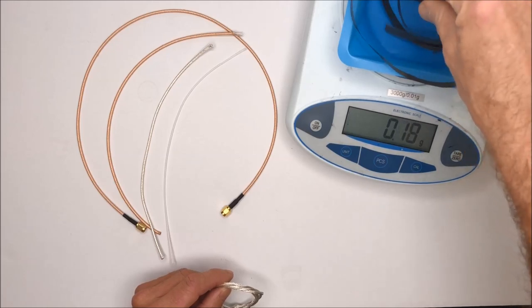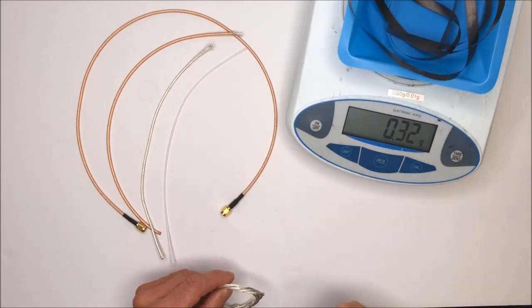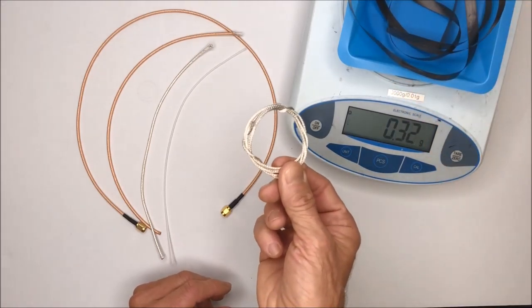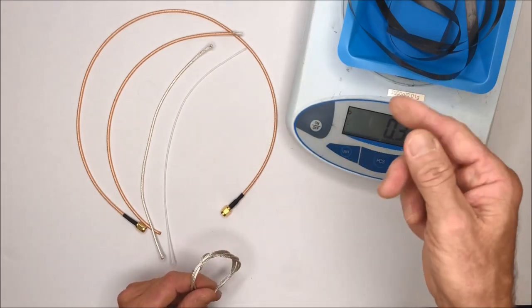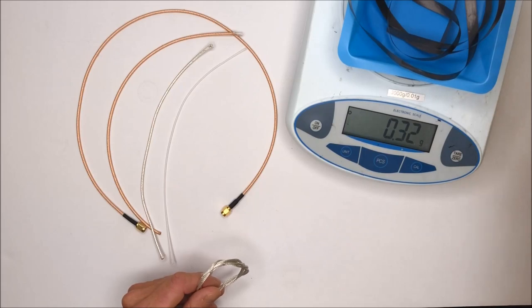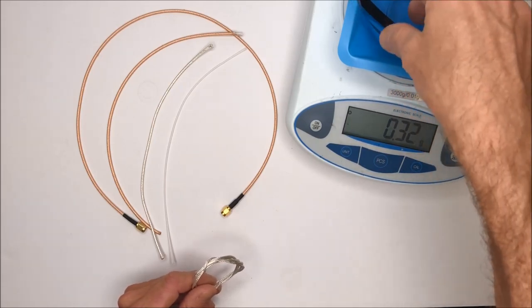So these two pieces of CNT tape are capable of replacing the entire metal braid that is used in this coaxial cable. So these two pieces of tape weigh .32 grams in two feet.